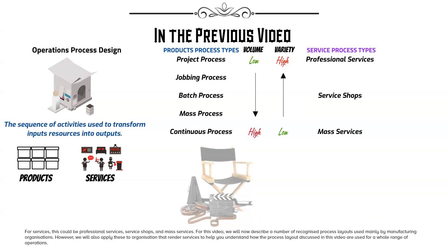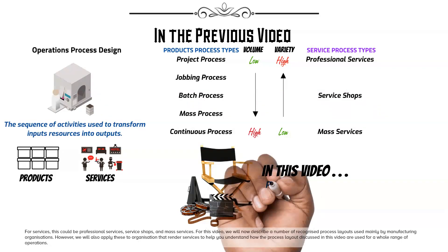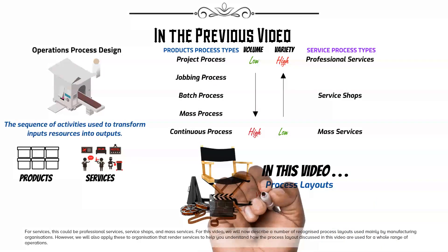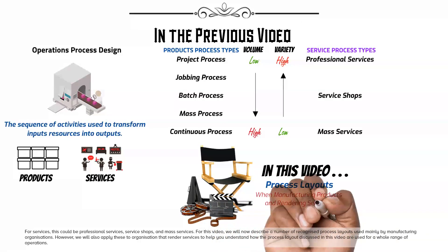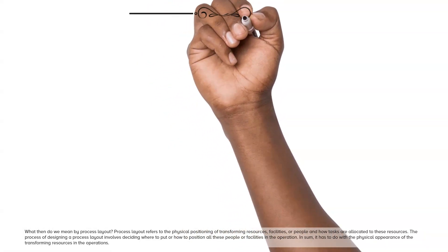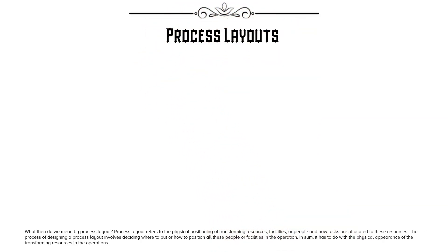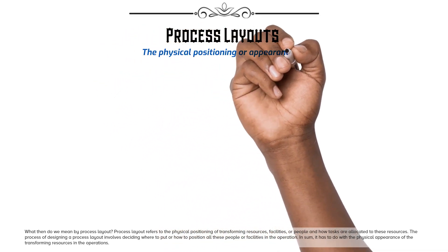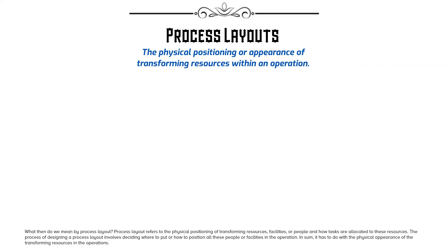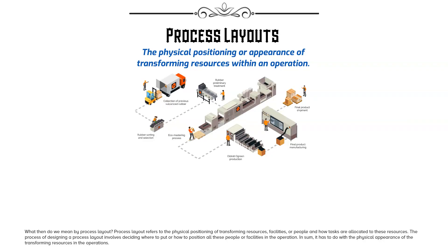For this video, we will describe a number of recognized process layouts used mainly by manufacturing organizations. However, we will also apply these to organizations that render services to help you understand how the process layouts discussed in this video are used for a whole range of operations. Process layout refers to the physical positioning of transforming resources, facilities, or people and how tasks are allocated to these resources.